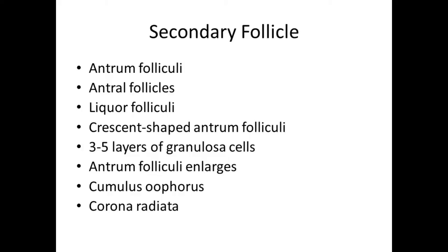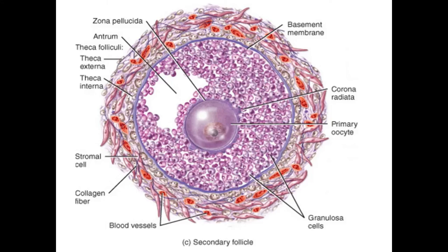Cumulus oophorus and corona radiata are also formed. This schematic diagram of the secondary follicle shows the primary oocyte, zona pellicida, corona radiata, antrum, granulosum cells lying on the basement membrane, theca interna, and theca externa.